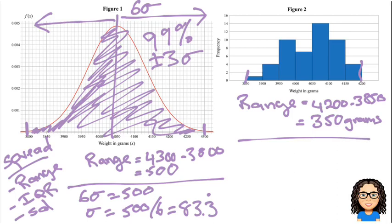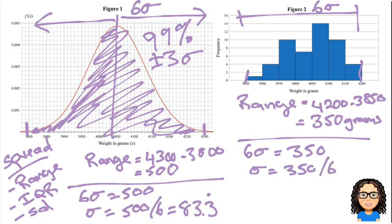Let's do the same thing for figure two. So we know we've got our range there, and again, I'm expecting 99% of my data should be within plus or minus three standard deviations. So that's a total range of six standard deviations. So six standard deviations would be equal to 350. So one standard deviation is 350 divided by six, which gives us a value of 58.3 recurring.